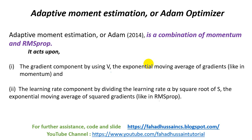So how does this combination work? The gradient component uses V — the exponential moving average of the gradient, like in momentum. The learning rate component involves dividing the learning rate alpha by the square root of S, where the learning rate alpha will be divided by square root of S.